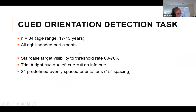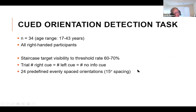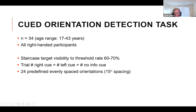I have data from 34 right-handed participants. The task is already quite hard, so to make it about equally difficult for everyone, I used a staircasing procedure beforehand — a separate initial task where participants just indicated whether they saw the target, used to staircase target visibility so it's roughly equal for everyone. There were equal numbers of trials for right cue, left cue, and no-info cue conditions, and the target could have one of 24 orientations.